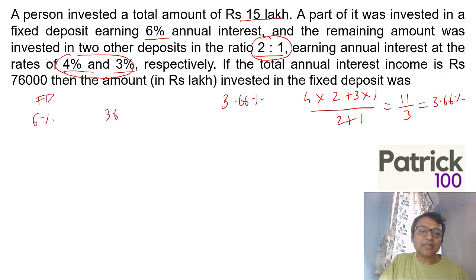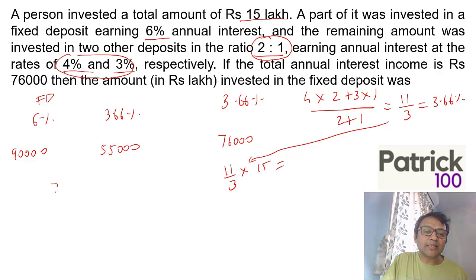Now 3.66 is the value of the second one. So fixed deposit is 6%, the second value is 3.66%, and you get a return of 76,000. You can convert to percentage or convert the percentage to value. I'll convert the 6% to value: 6% of 15 lakh is 90,000. 3.66% of 15 lakh is 55,000.